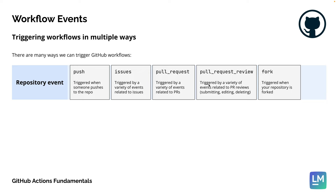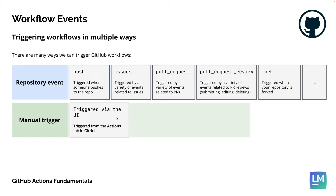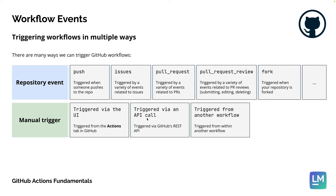There are many events available. I'll show you in a few minutes the GitHub documentation page where you can find all available events. First, let's understand the groups. The second group is a manual trigger — we can trigger workflows from the UI. As long as we specify the trigger in the GitHub YAML file, the button to trigger the workflow in the UI becomes available. We can also trigger workflows via API calls and from within other workflows. Later on, we will discuss the concept of reusable workflows.